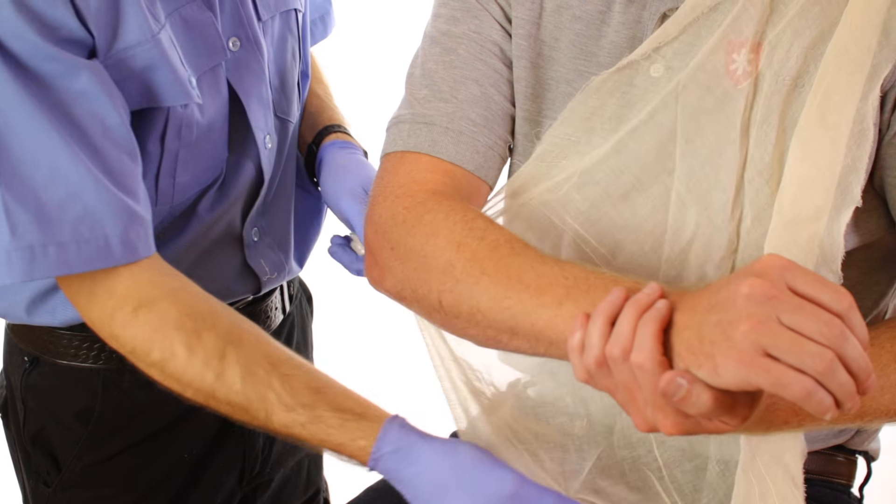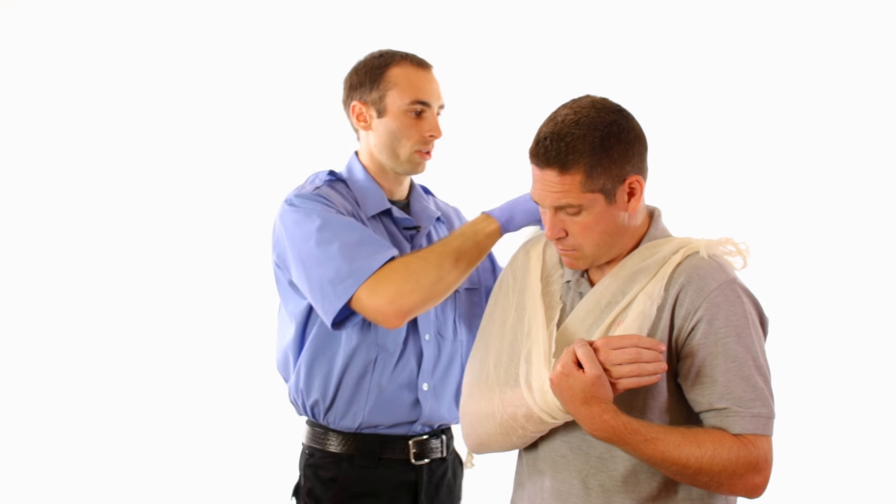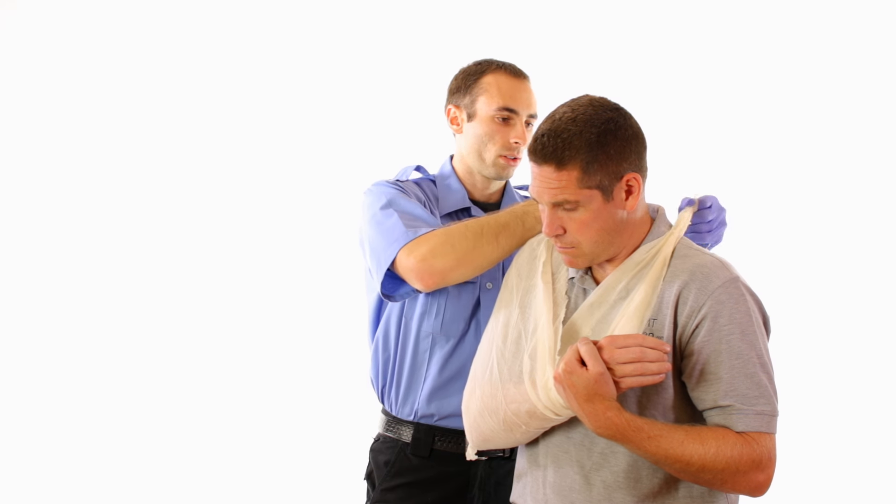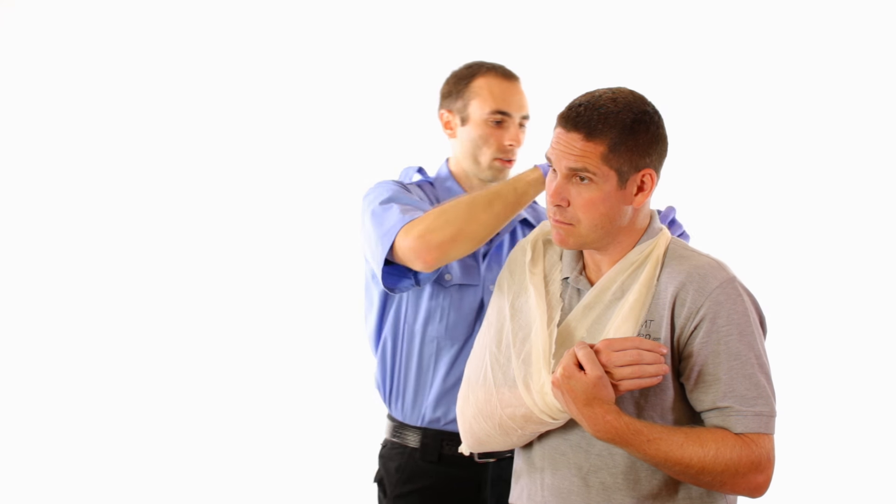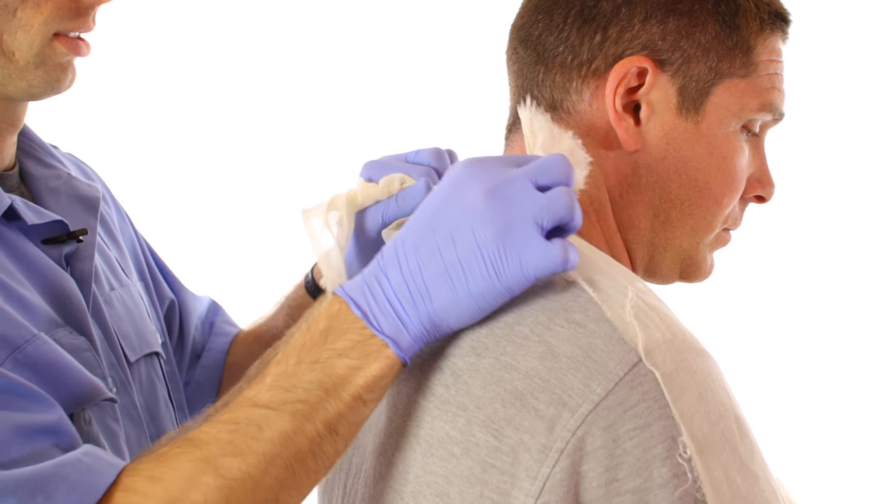Slide the sling behind the extremity and take the remaining bandage up and over the shoulder. Tie the two ends together to adequately support the injured extremity.